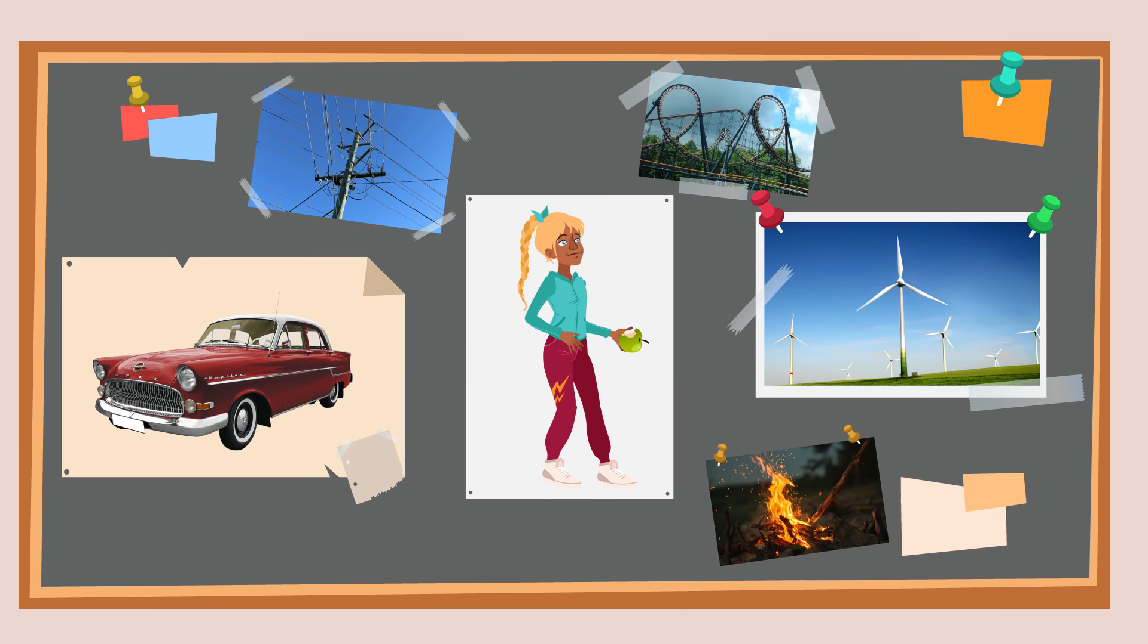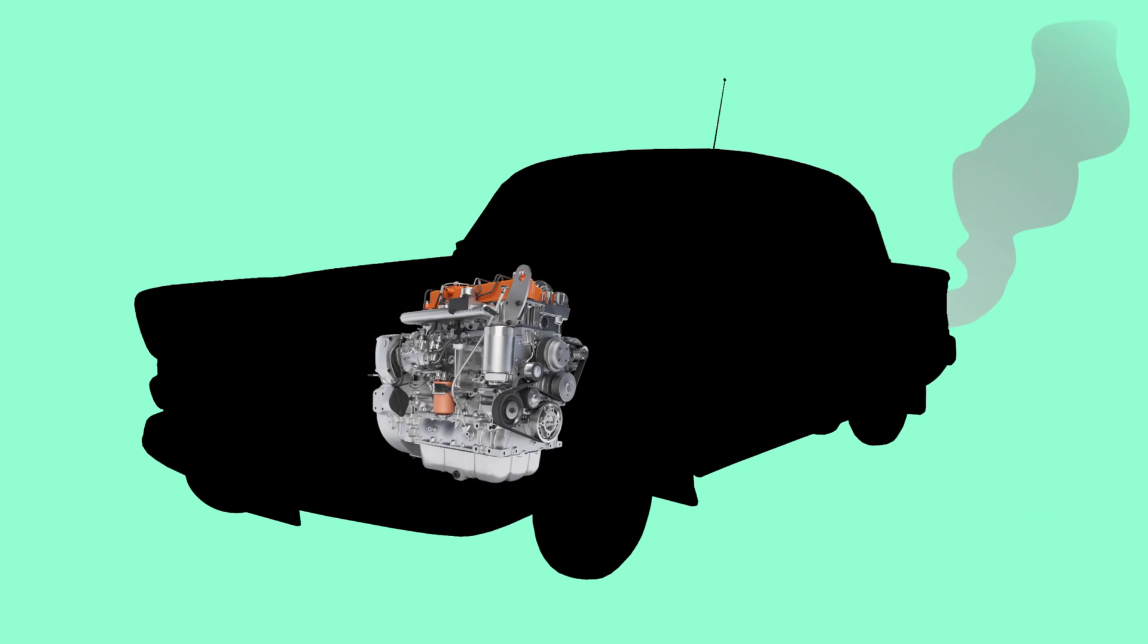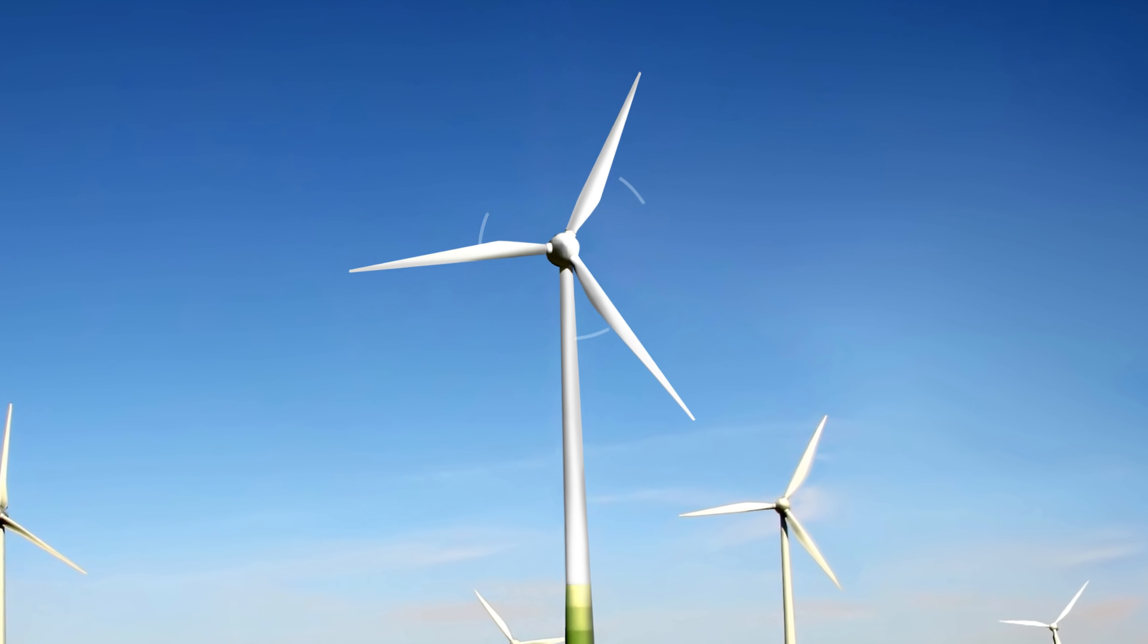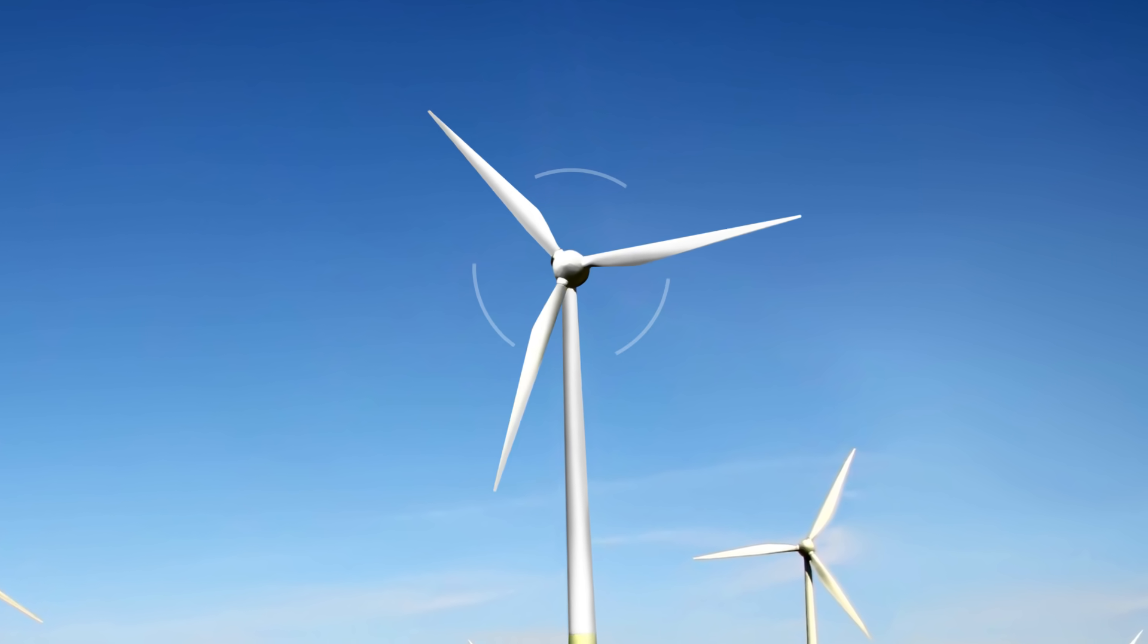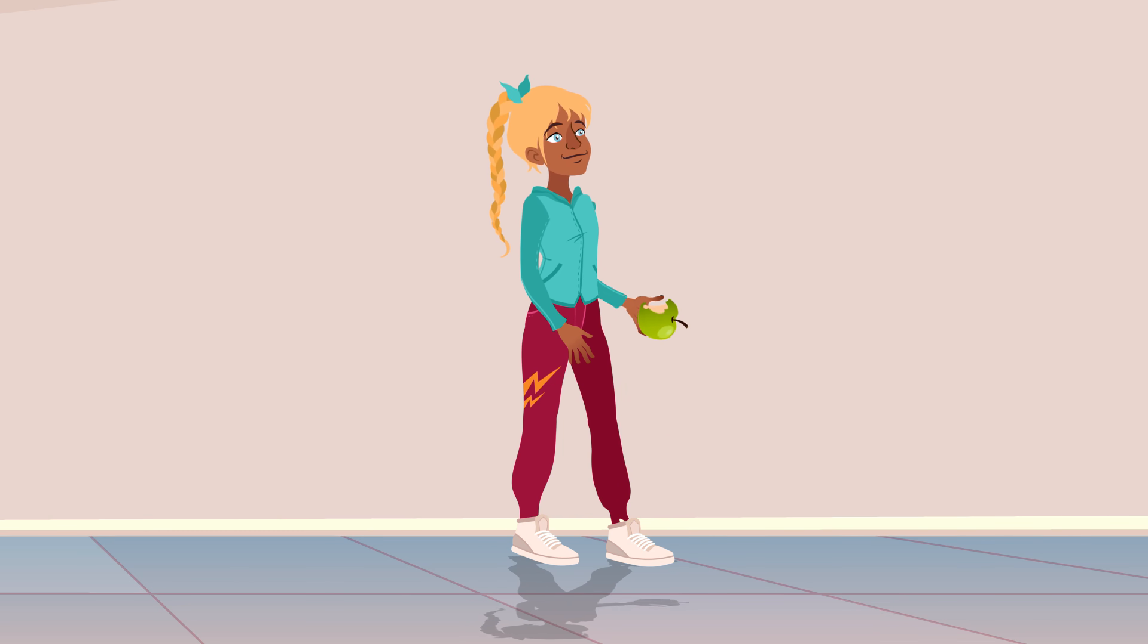For example, cars move thanks to energy produced by motor combustion. The blades of the mill start moving thanks to the energy produced by the wind. We can walk or jump thanks to the energy we get from food.